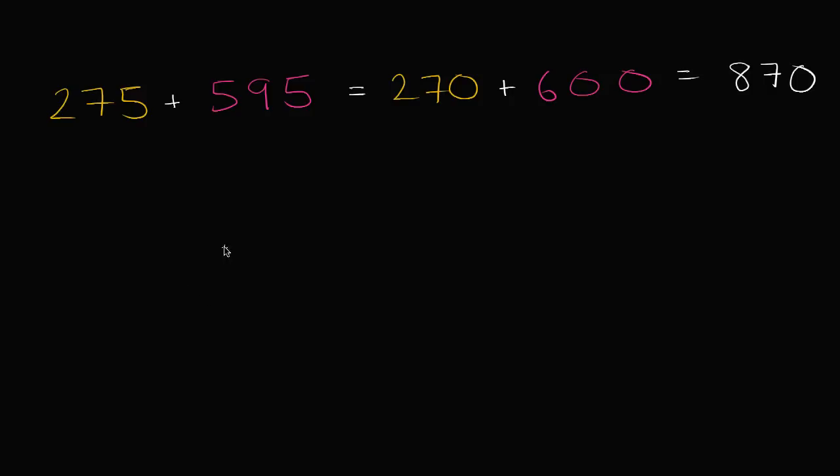Now, another way that you could have tried to tackle it is, let's try to get this 275 to, let's try to get it to 300. So, we could say this is the same thing as 300. And to get there, I just added 25. But, if I add 25 from this number, I'm going to have to take 25 away from this number. So, I could subtract 25 from here. And then I would get 300 plus, 595 minus 25 is going to be 570. And this is also easy to compute. 300 plus 570 is 870.